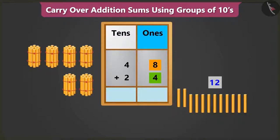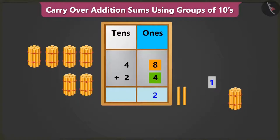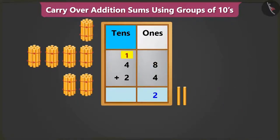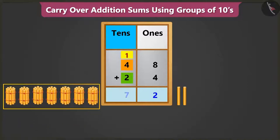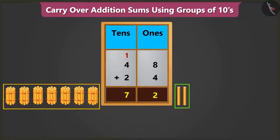Yes, so from 12 ones, we will write 2 in the ones box and carry over 1 tens in the tens box. Now, when we add 1 and 4, we get 5 and adding 5 and 2, we get 7. Now, 7 tens added to 2 ones makes 72. So, we have to pay 72 rupees.